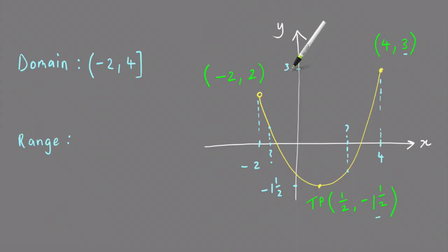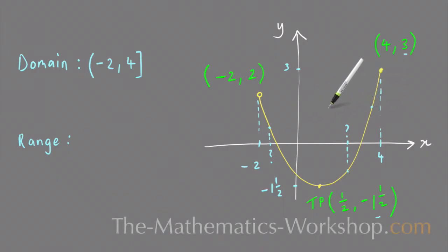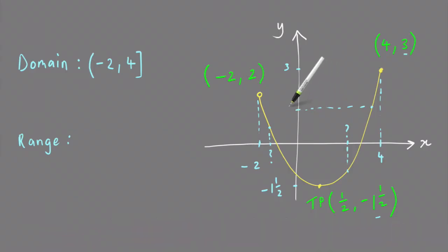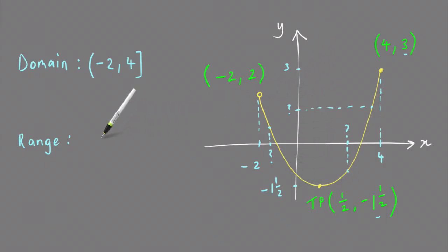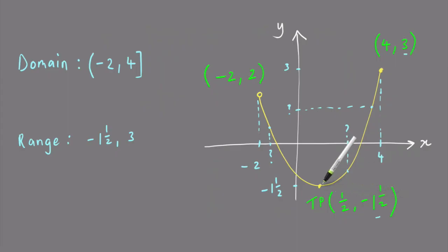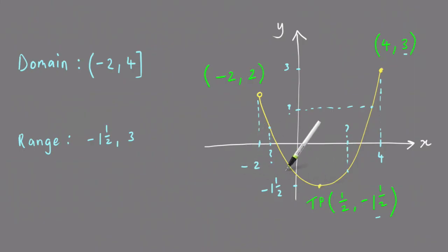Marking in y equals 3 by going across, I can pick any point on the curve and no matter where, the y value is going to be somewhere between minus one and a half and 3. The lowest value is minus one and a half and the highest is 3. The lowest value, minus one and a half, is included because that turning point does not have an open circle, so it is included.